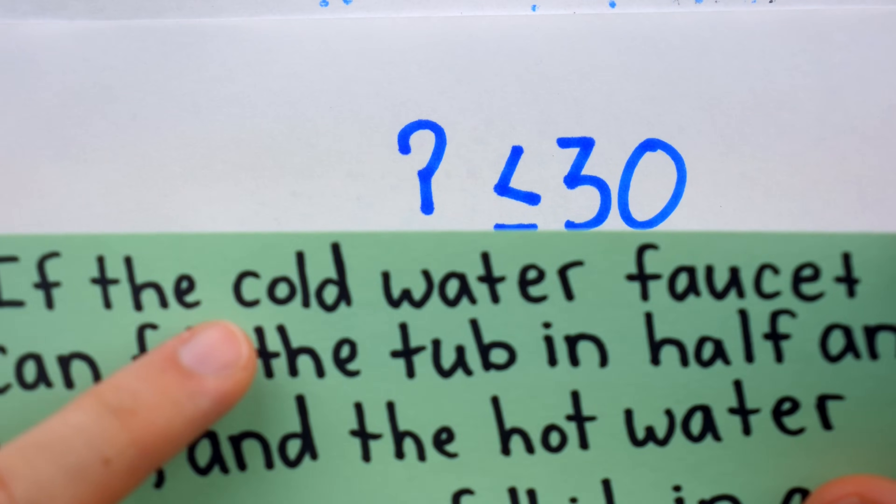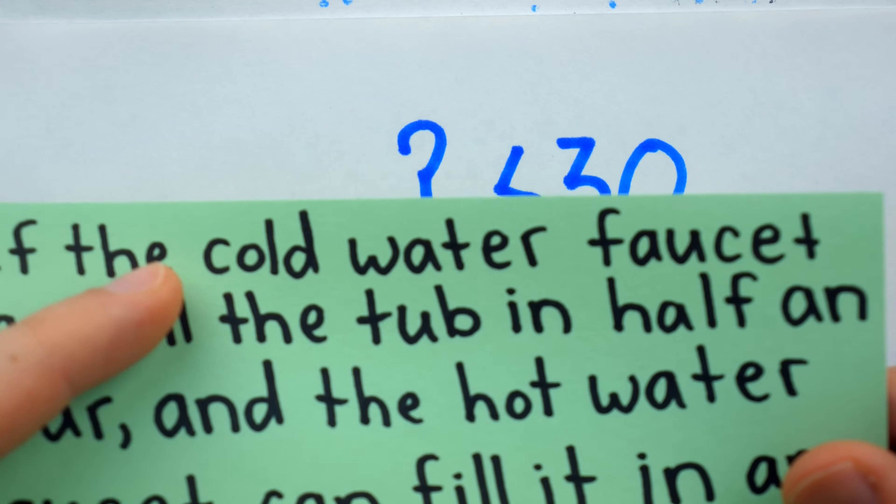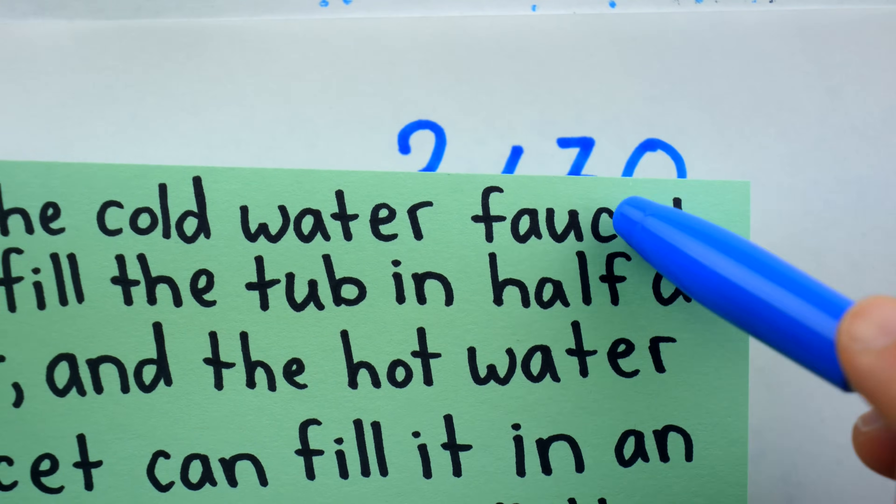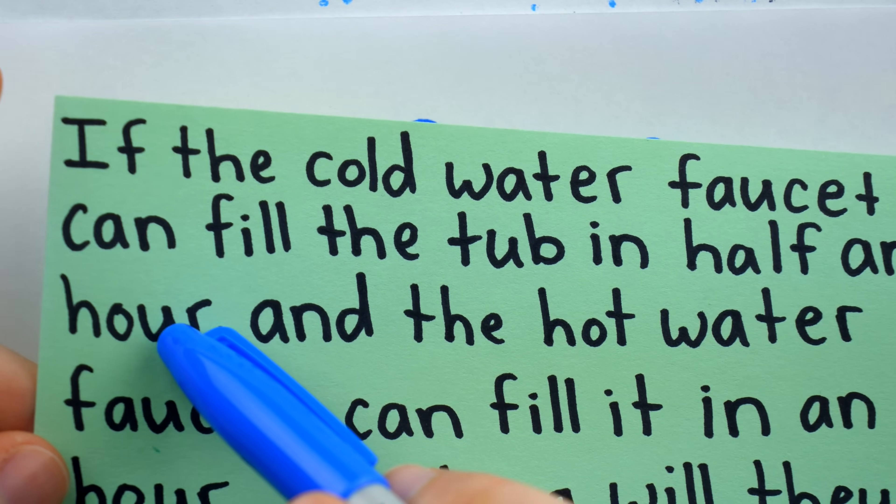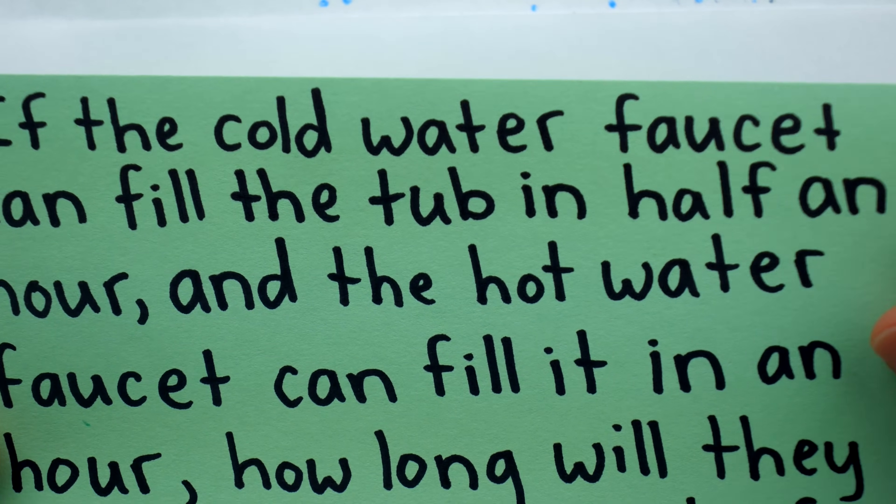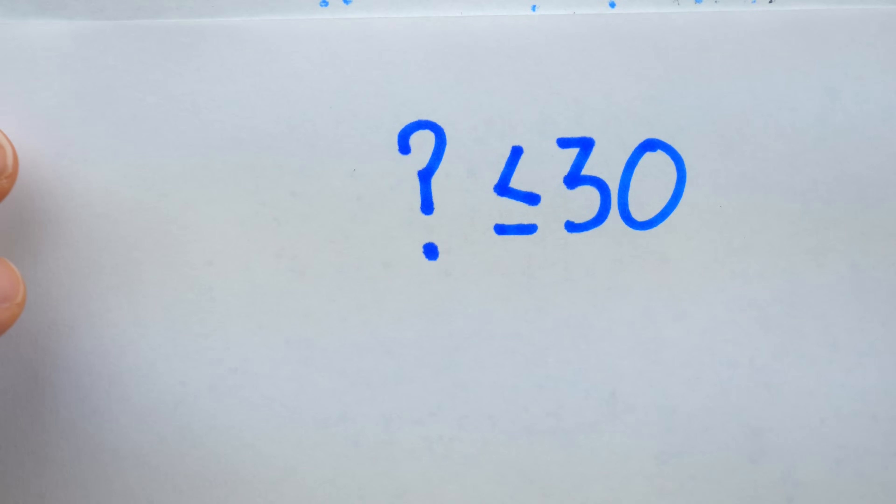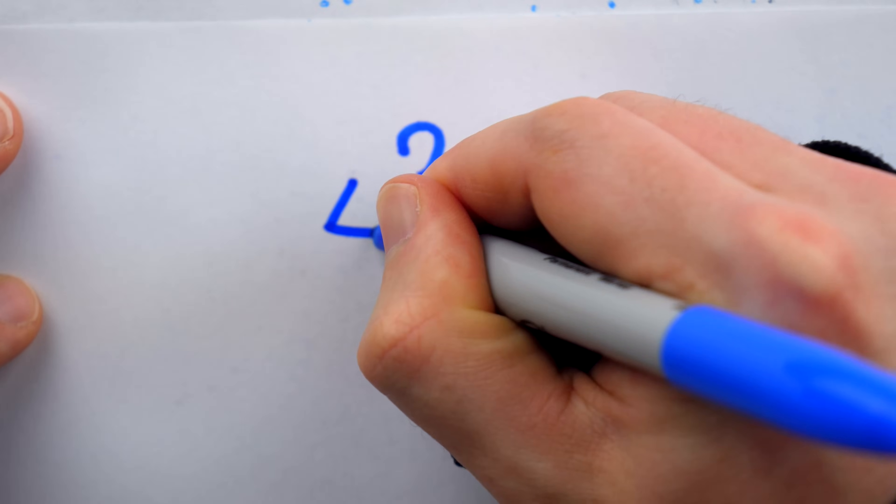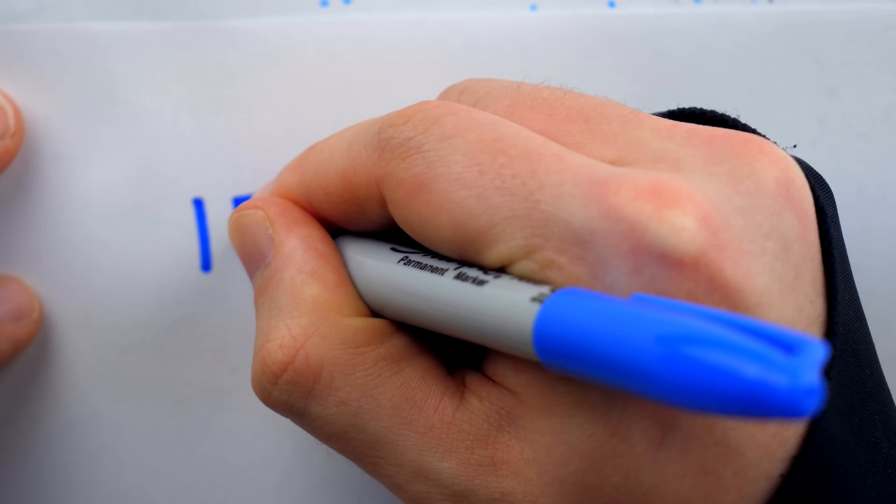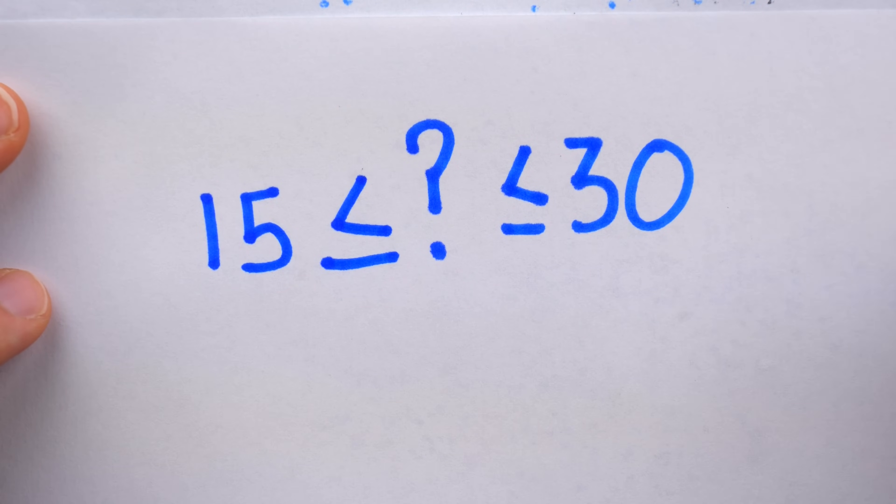And we also know that if it was two cold faucets running together, well, since each one can fill a whole tub in half an hour, if there were two of them running together, they could fill a single tub twice as fast. So they could actually fill a single tub in 15 minutes if it was two cold faucets running together.